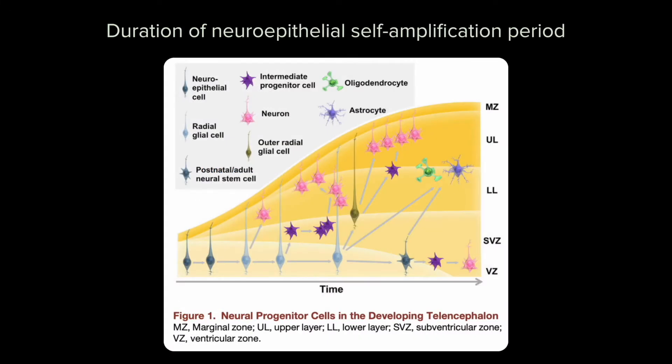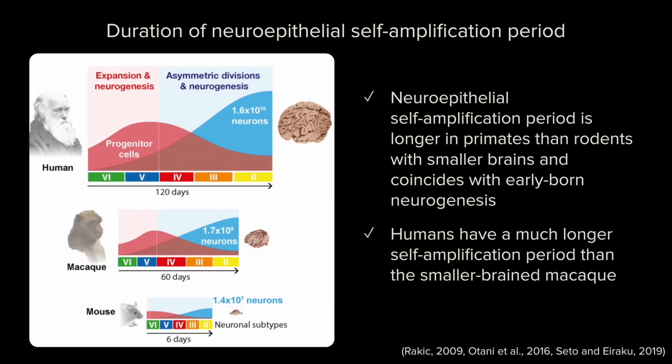Early in development, the ventricular zone is composed of symmetrically dividing, self-amplifying neuroepithelial cells that transform into radial glia just before the onset of neurogenesis. The duration of the neuroepithelial self-amplification period is a key determinant of neocortical expansion, because it increases the size of the neural progenitor pool. As expected, primates have a longer self-amplification period than rodents, resulting in the eventual development of many more neurons.